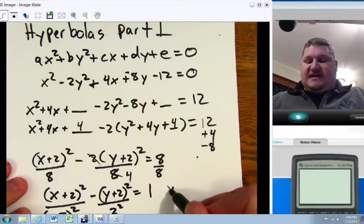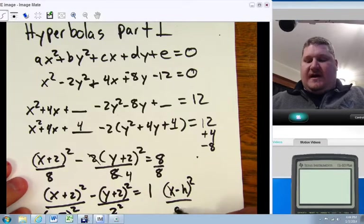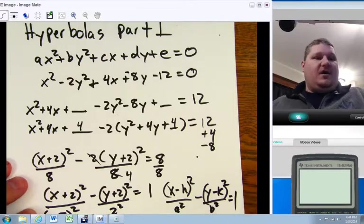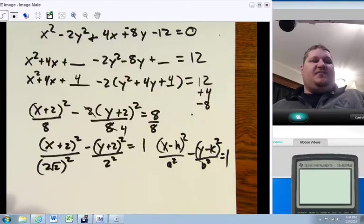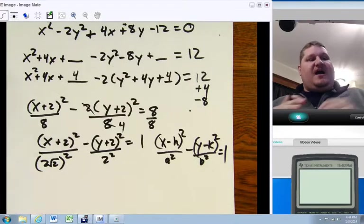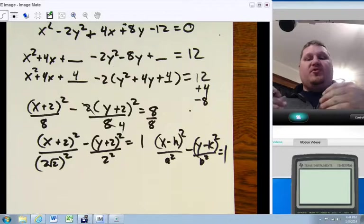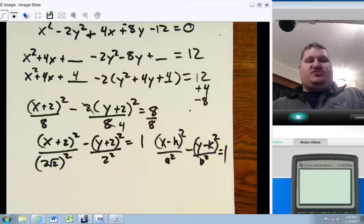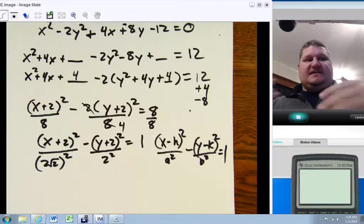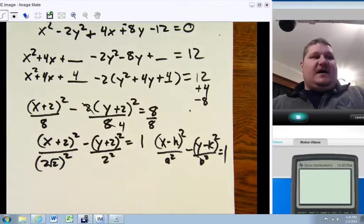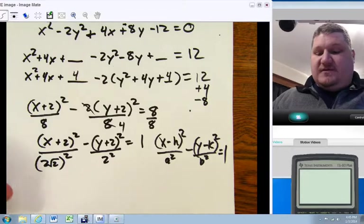It matches X minus H, the quantity squared, over A squared, minus Y minus K, the quantity squared, over B squared, equals one. That is a standard hyperbola form. Now, from this place, we can go ahead and move forward with actually graphing it. You'll notice in this case, I didn't give you the easy pre-done version. This is a little more complicated, but we don't apologize. We move forward.